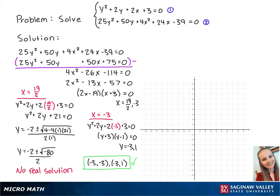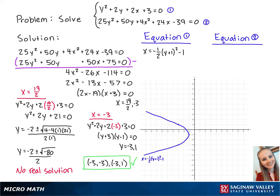We can also graph the two equations and the solution points. The standard form for the first equation is x = -1/2(y + 1)² - 1. Using our knowledge of transformations, we'll get a parabola that looks like this.